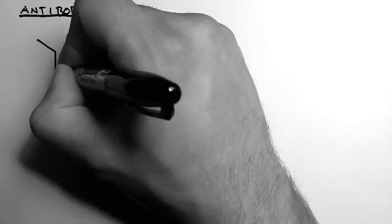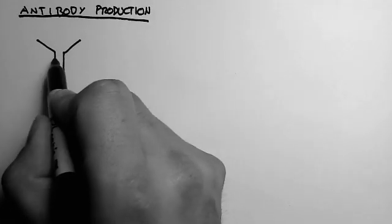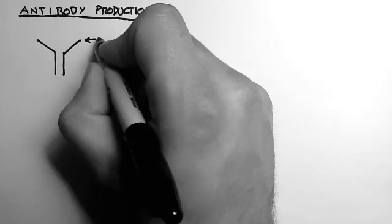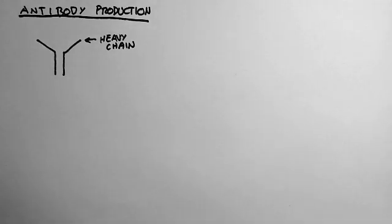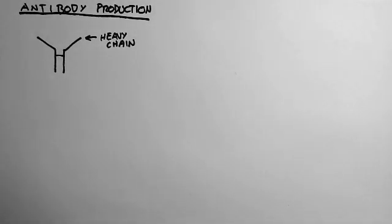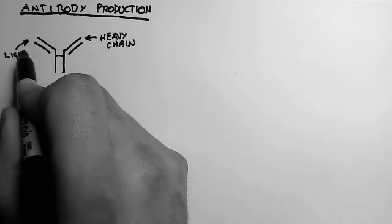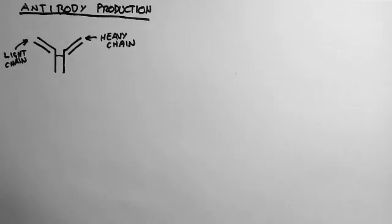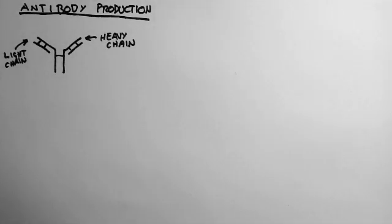An antibody is made up of four chains of proteins linked together. These two chains are called the heavy chains, and they're linked together. Then there are two other chains linked to the heavy chains, and they're called the light chains because they're smaller. These light chains are linked to the heavy chains, and that's what gives the antibody its Y shape.